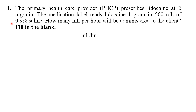You also need to watch the units carefully. The prescribed dose of lidocaine is 2 mg per minute, but the medication label gives 1 gram in 500 mL. The units are different — the prescribed dose is in mg and the dose on hand is in grams — so you need to convert mg into grams first.